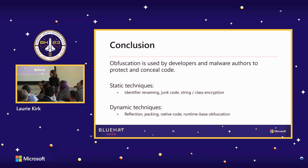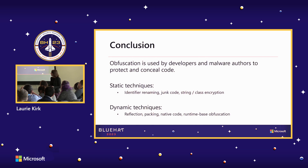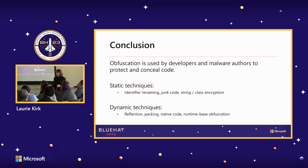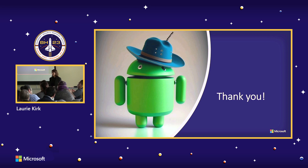In conclusion, obfuscation is the process a developer — either legitimate or malicious — might use to conceal their code and hide sensitive data from reverse engineers. Static techniques include identifier renaming, junk code insertion, and string or class encryption to hide sensitive data on disk until execution. Dynamic techniques include reflection and packing (decrypting and decompressing dynamic code and loading it into the runtime), native code (writing part or all of the application in C or C++), and runtime-based obfuscation (modifying the application's own runtime state while executing). Thanks so much, and I hope you all learned a little more about obfuscation.